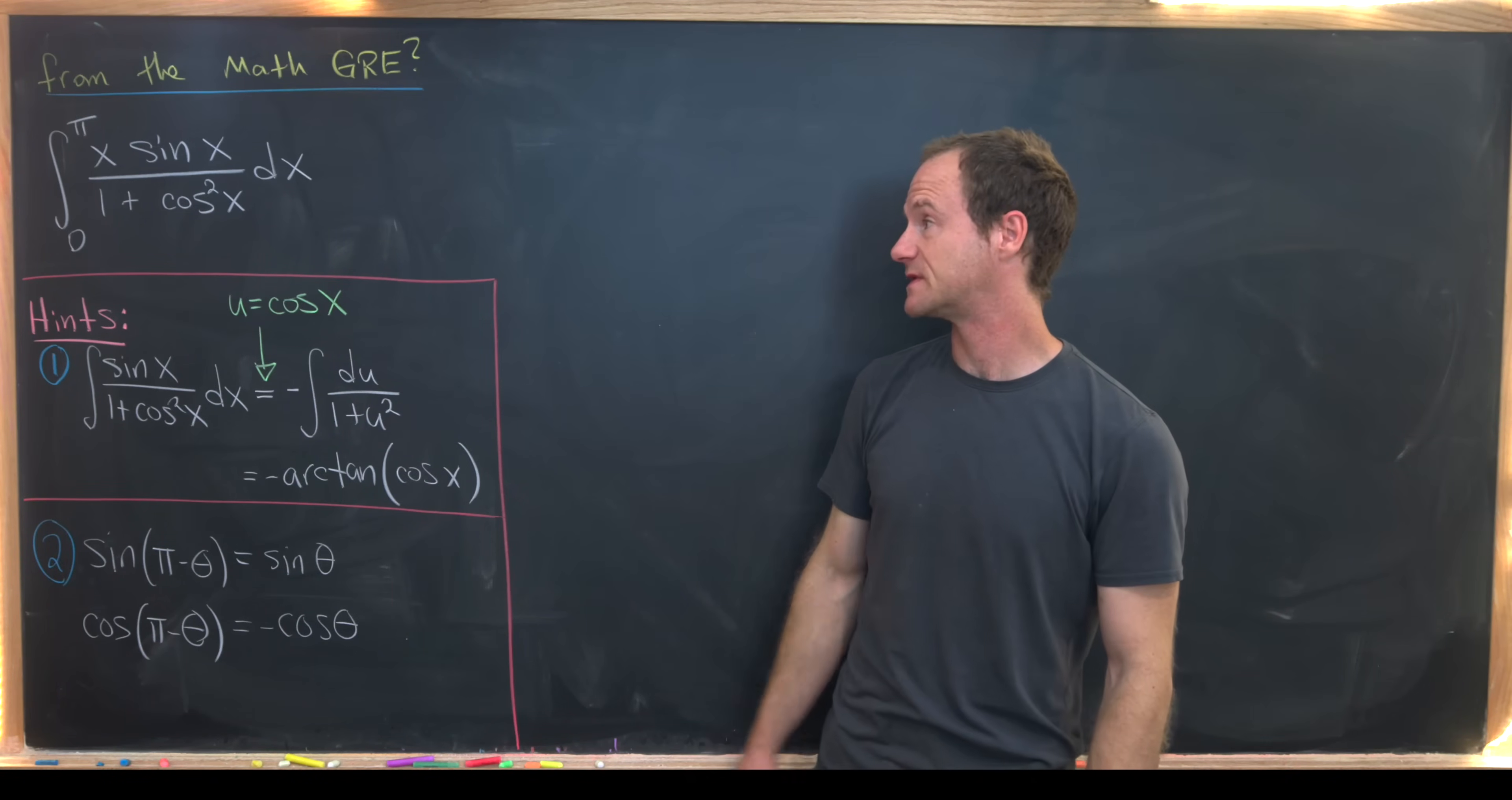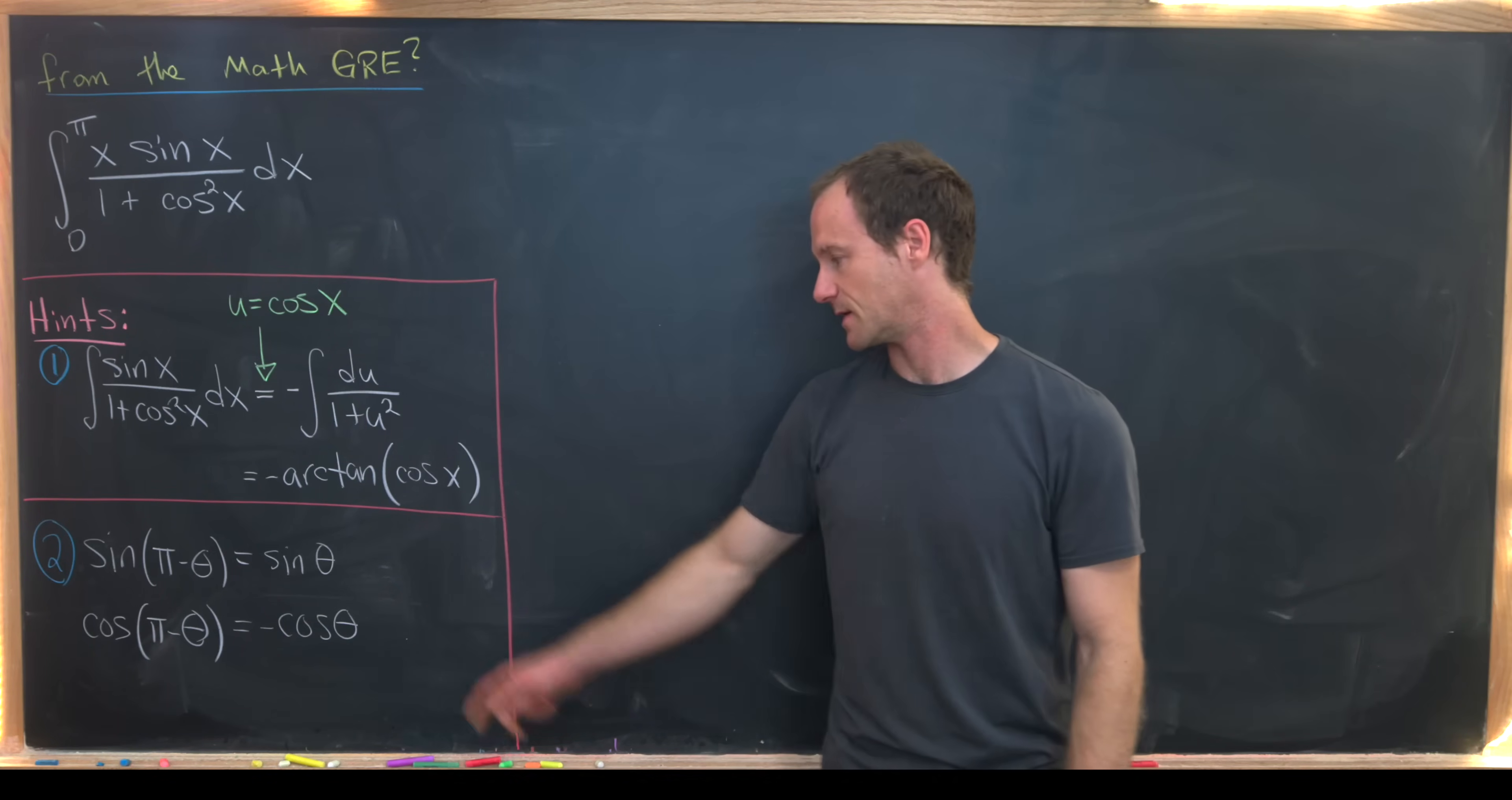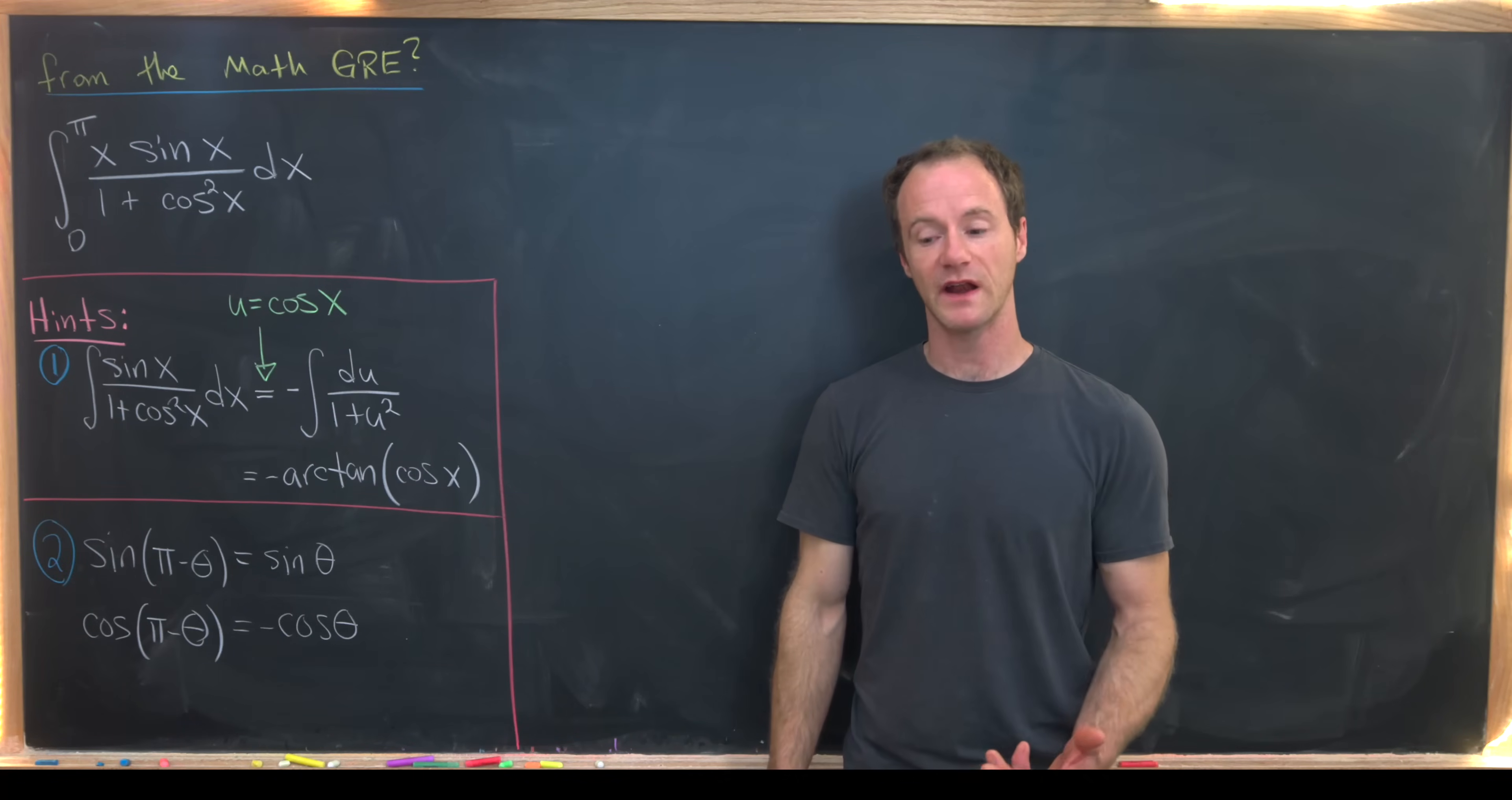Maybe by exploiting some symmetry in the bounds of integration. Let's notice that sine of pi minus theta is the same thing as sine of theta. That's a standard trigonometric identity. And furthermore, cosine of pi minus theta is minus cosine of theta. That might seem problematic, but notice up here, cosine is being squared. So really, if we square both sides of this, we have equality without a minus sign. Now that we've got this taken care of, we're ready to look at a solution.